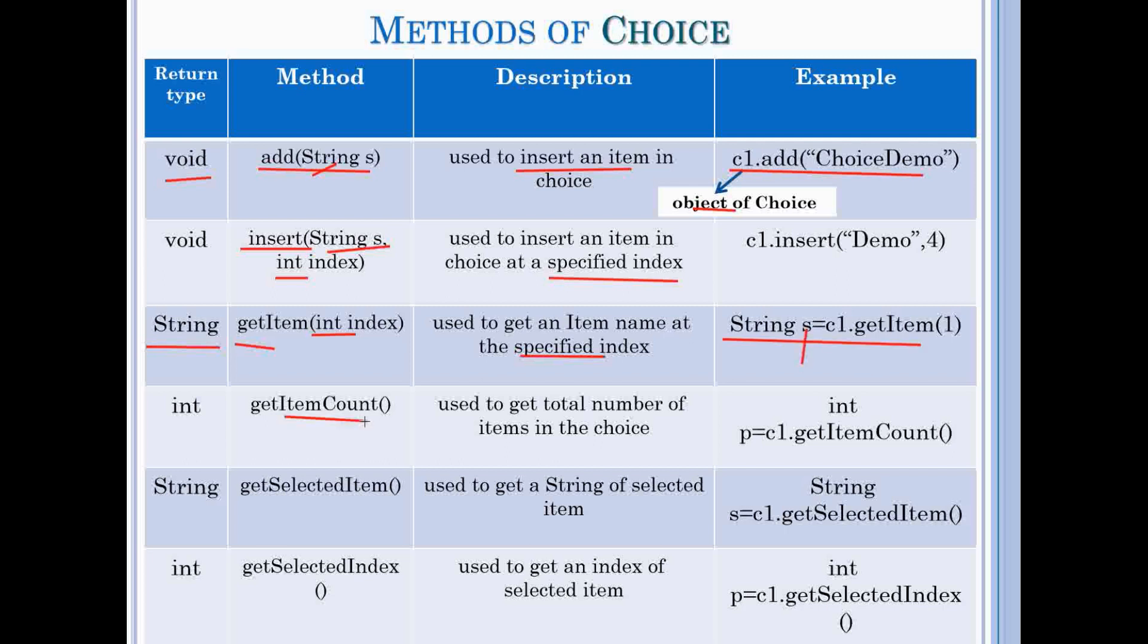Fourth method is getItemCount which returns integer value and is used to get total number of items present in choice box. This can be used like this. Here we store result in integer object.